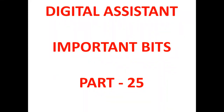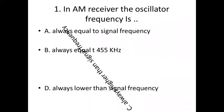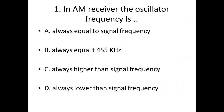First bit. In AM receiver, the oscillator frequency is: Option A, always equal to signal frequency. Option B, always equal to 455 kHz. Option C, always higher than signal frequency. Option D, always lower than signal frequency. Answer: Option C, always higher than signal frequency.